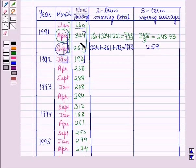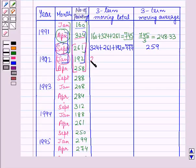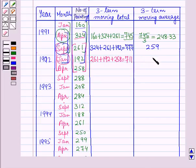Again for the next step, we leave the previous value and add the 3 values for the next 3 terms, placing the total against the middle term, which is the month of January. On adding these 3 values we get 711, and on dividing this total by 3 — that is 711 by 3 — we get 237.